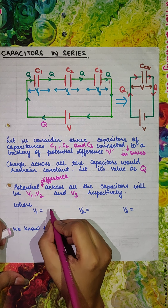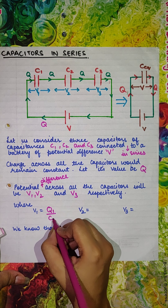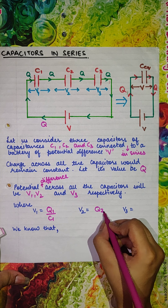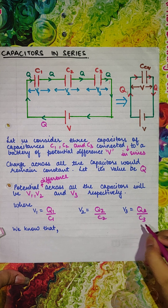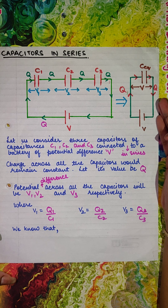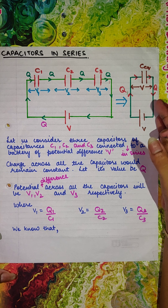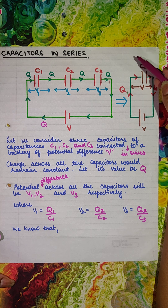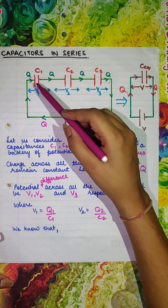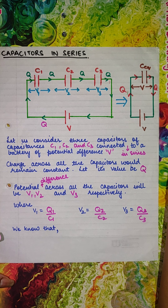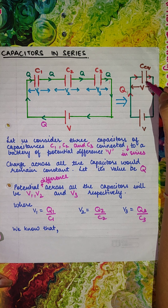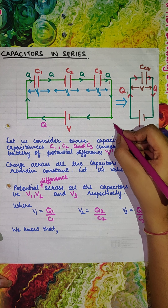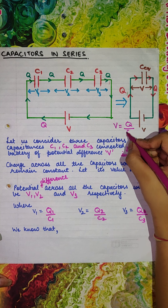Where V1 can be written as Q by C1, V2 can be written as Q by C2, and V3 can be written as Q by C3. On the right side of the circuit diagram you can see another circuit diagram in which I have only drawn one capacitor having equivalent capacitance as the 3 other capacitors. The charge across that capacitor would be Q, supplied by the battery, and the potential difference is same as that of the battery. So we can also write V as Q by C equivalent.